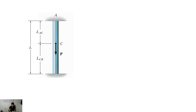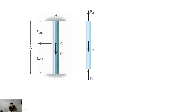The free body diagram shows a force at A, a force at B, and the applied load P. Applying the summation of forces along the vertical gives: FB + FA − P = 0. This gives one equation but two unknowns — FA and FB. We cannot solve for them using statics alone, so this is called a statically indeterminate member.